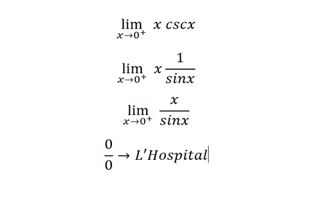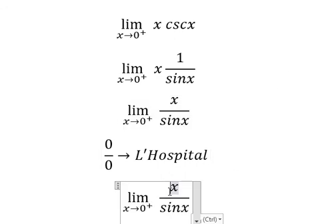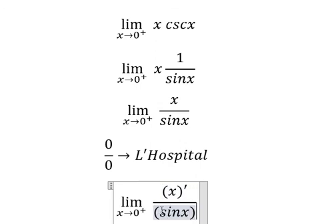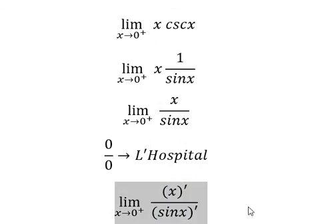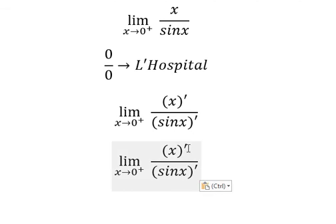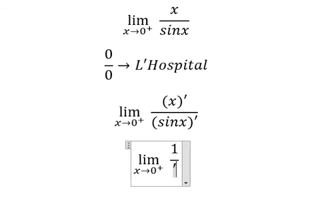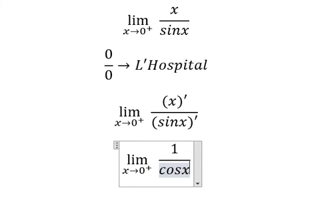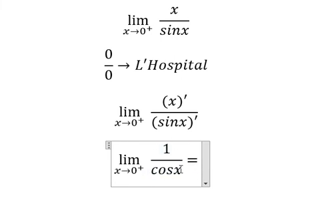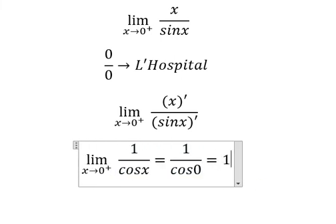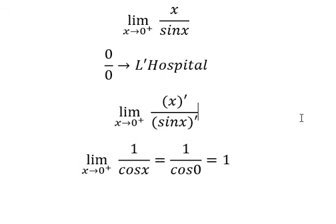That means we need to differentiate the numerator and the denominator. The numerator gives one, and the denominator gives cosine s. Substituting zero, we get one over cosine zero, which equals one. That is the answer. Thank you for watching.